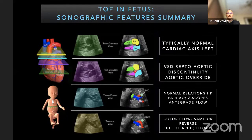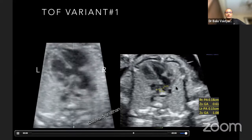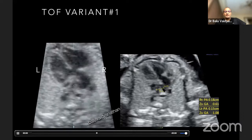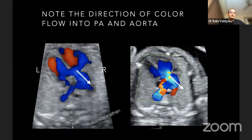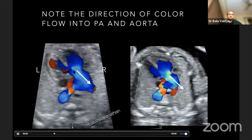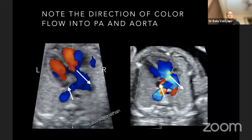Let us look at a couple of variants. This is another case where you see an overriding aorta, a large aorta. When you look carefully, the branch pulmonary arteries are seen — the RPA and LPA are very small structures. When you look at color, there is forward flow into the aorta with a lot of aliasing, and even a bit of aortic regurgitation. There is retrograde flow into the pulmonary artery, meaning pulmonary atresia. No antegrade flow into the PA — only retrograde flow through the ductus arteriosus — and the branch PAs are very small.